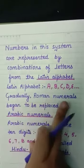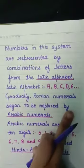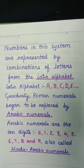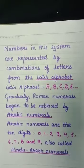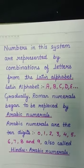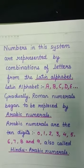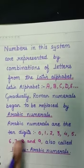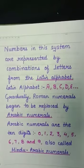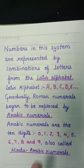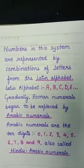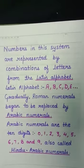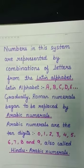Gradually, Roman numerals begin to be replaced by Arabic numerals. समय के साथ-साथ, Roman numeral system को replace कर दिया गया — Arabic numerals से। Arabic numerals are the 10 digits — 0 to 9। इन्हें हम Hindu-Arabic numerals भी कहते हैं।